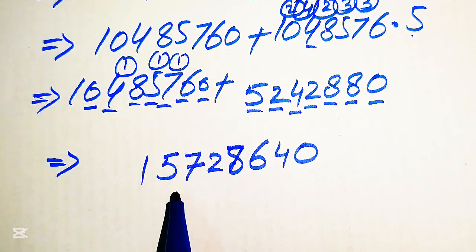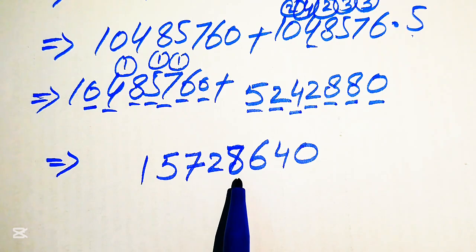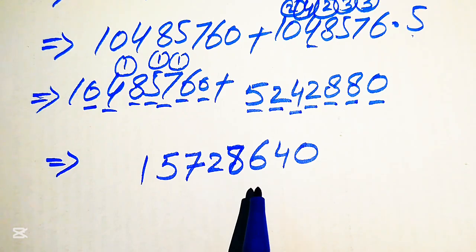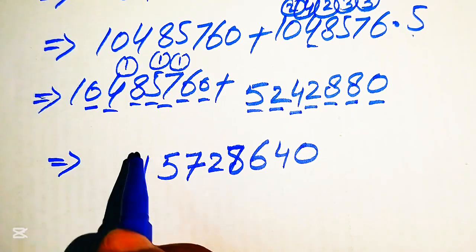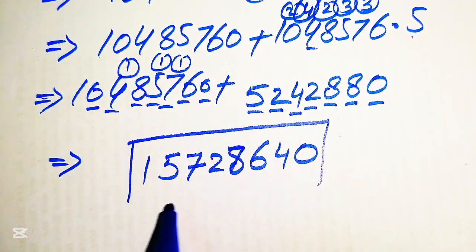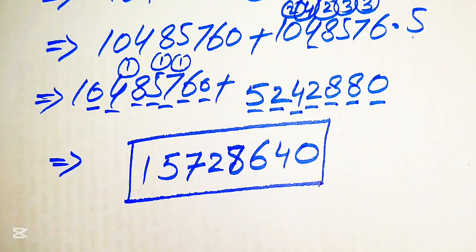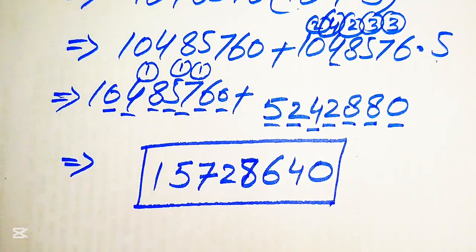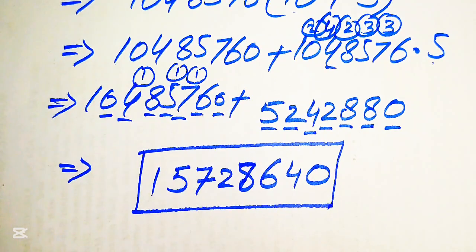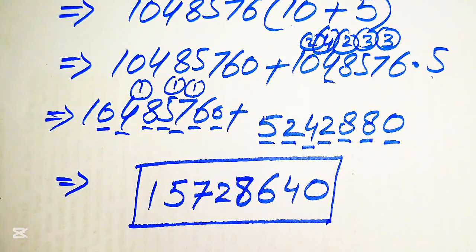Finally we have 1, 5, 7, 2, 8, 6, 4, 0 — so the final answer is 157,286,400. Thank you so much for watching this video. Please subscribe to my channel for more exciting videos.